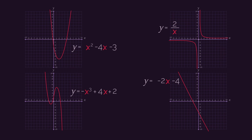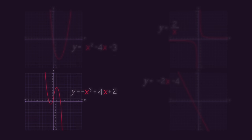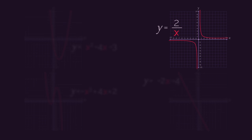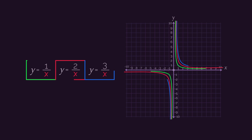Did you get it right? You should already know that this is a straight line because the highest power of x is 1. And this positive quadratic x squared is a u-shaped curve. The x cubed is a cubic, and so it looks like this. So then, by default, this equation must go with this graph. These are known as reciprocal functions — a number divided by x — and these are the reciprocal graphs.